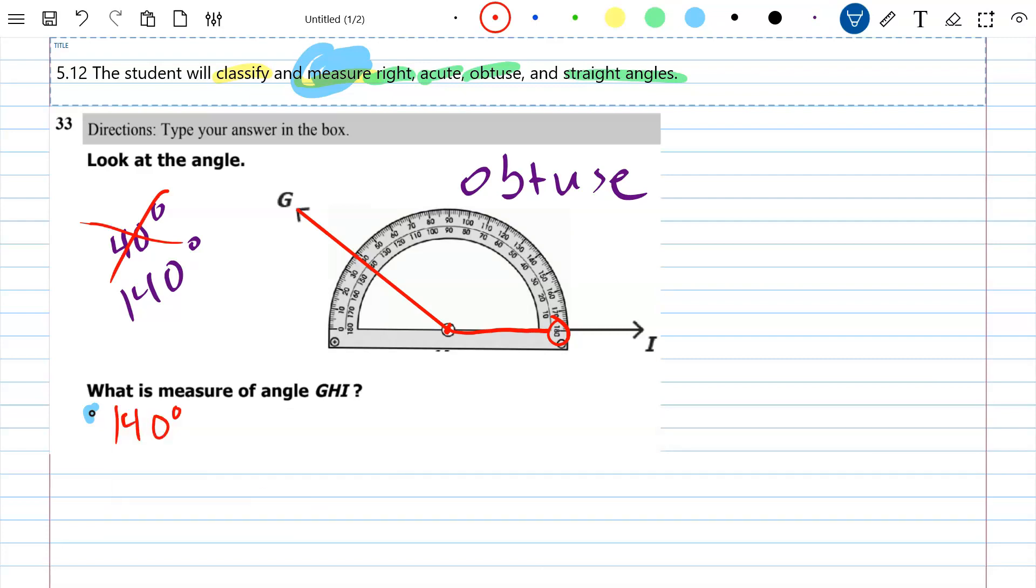I should have typed in 140, and if you got within five degrees of 140 they would have given you credit for it. Alright, took a little bit of work but that was number 33.